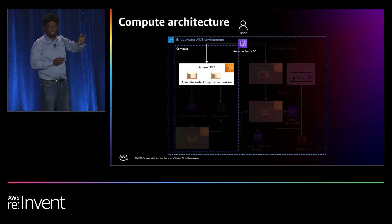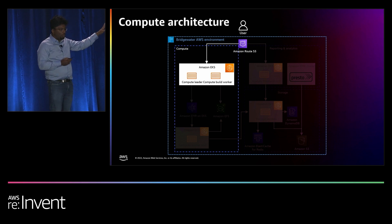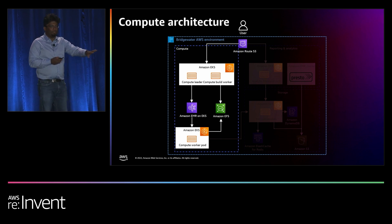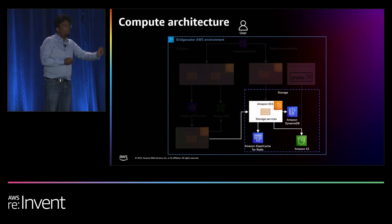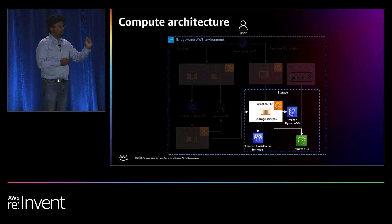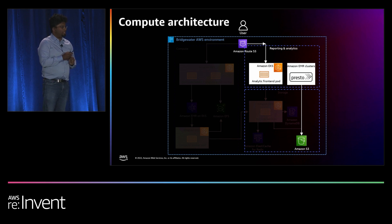The user — in our case an economic researcher — is building a model. They write that in code using a proprietary language built on top of Scala. They submit that code to the compute leader, which takes that code, compiles it in the built worker, and sends it over to the worker pods to run at scale. It is based on Amazon EMR and EKS. All the intermediate data during simulation is written to EFS. All of our inputs — going back centuries of data — are in our data lake on Amazon S3. We use Amazon DynamoDB to store all the metadata, and Amazon ElastiCache Redis to accelerate some of the read workloads.